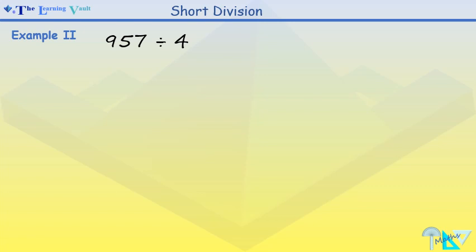Example 2. We've got 957 divided by 4. You can pause and have a go. Now, let's lay out our numbers nicely.